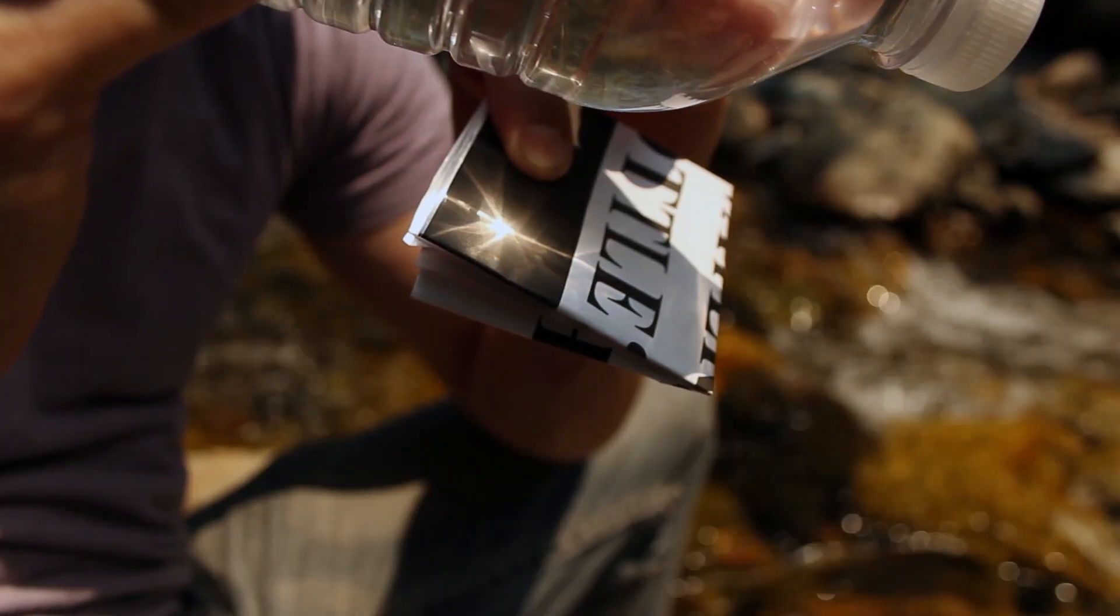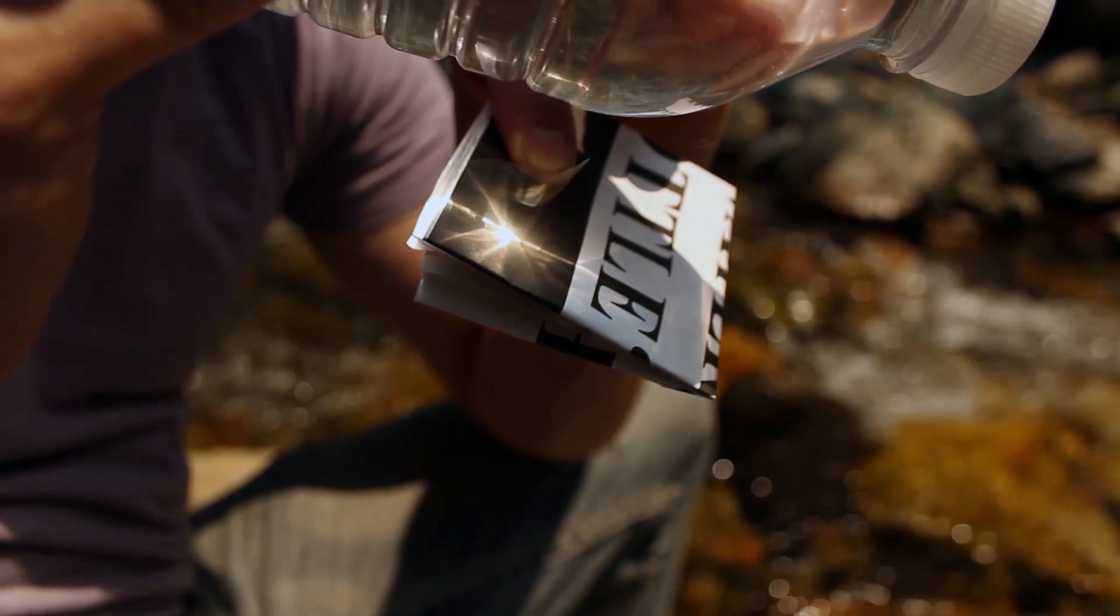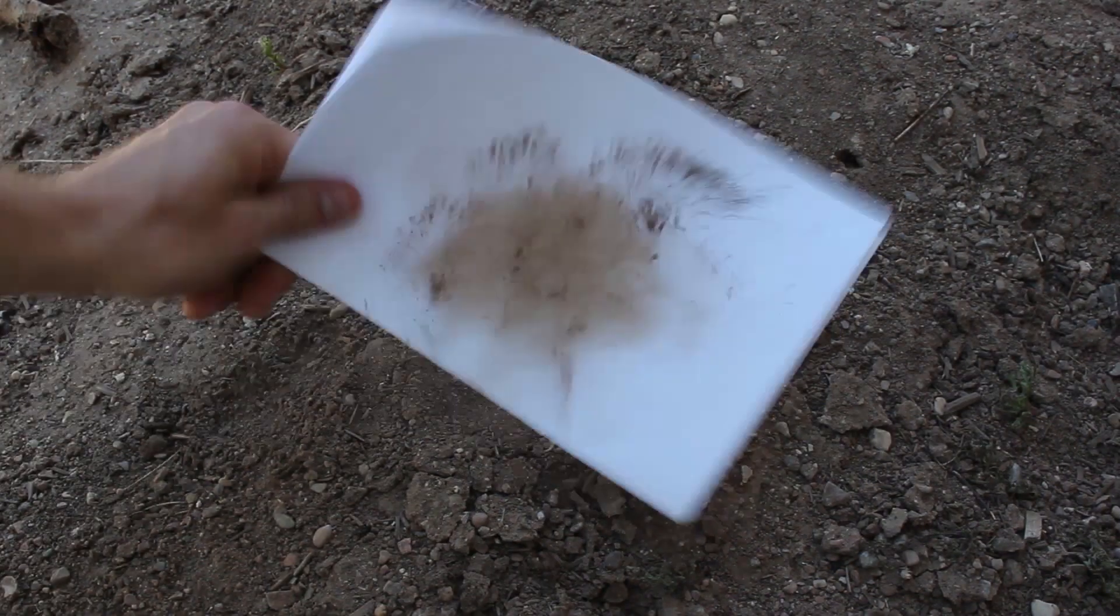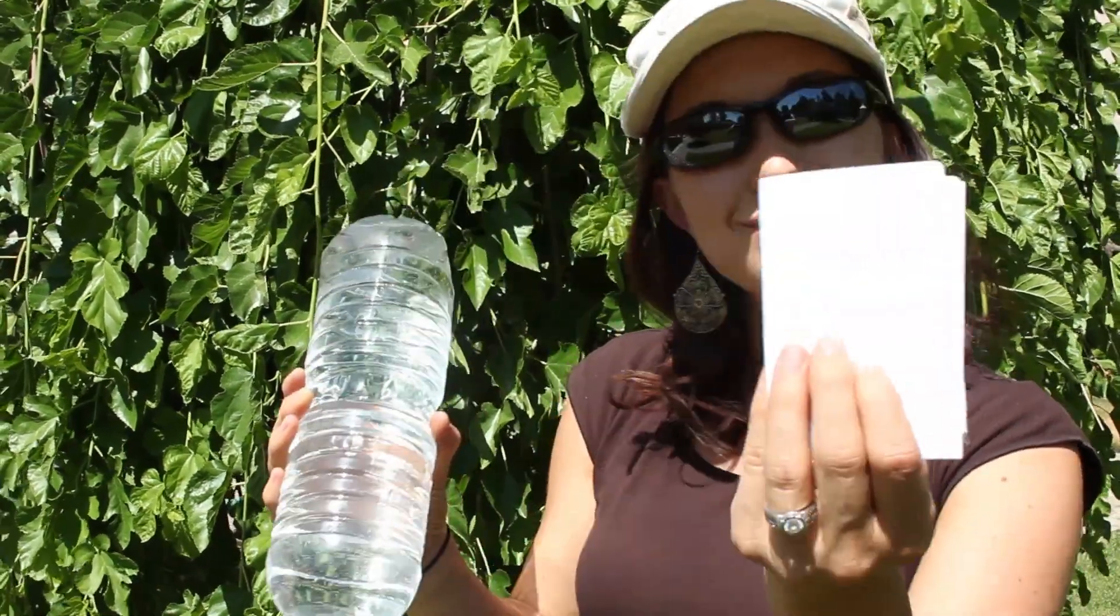If you're using paper for tinder, use something with big black letters or pictures, or rub some dirt on it, because the black absorbs the heat. Trying to do this on a white piece of paper is just going to frustrate you.